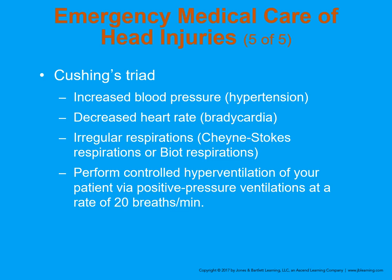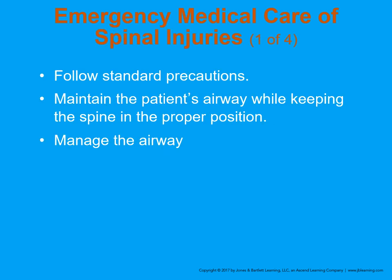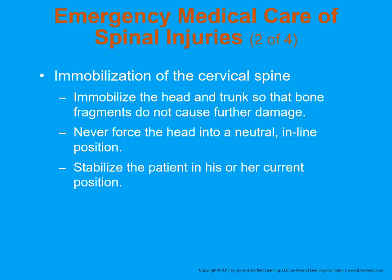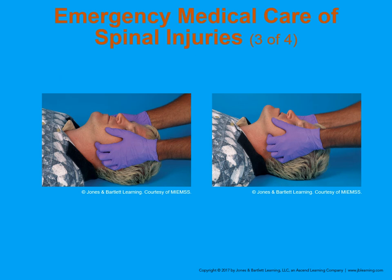Cushing's triad includes increased blood pressure, decreased heart rate or bradycardia, and irregular Cheyne-Stokes respirations. If these are seen in the presence of a MOI suggesting head injury, be concerned that the brain stem may be herniating. Follow standard precautions. Manage the ABCs and be prepared to ventilate the patient. Immobilize with a cervical collar — never force the head into a neutral inline position. If it causes too much pain or cannot be moved, leave it in the position found. If using jaw thrust on an unresponsive patient, consider placing an airway adjunct to maintain a patent airway.